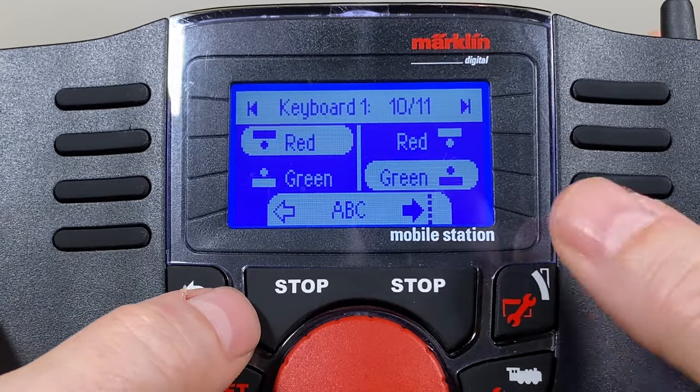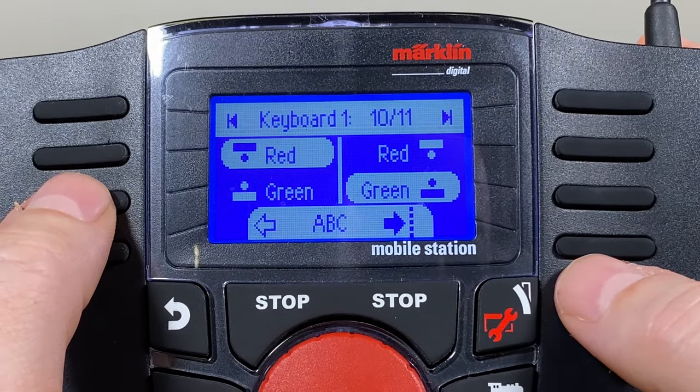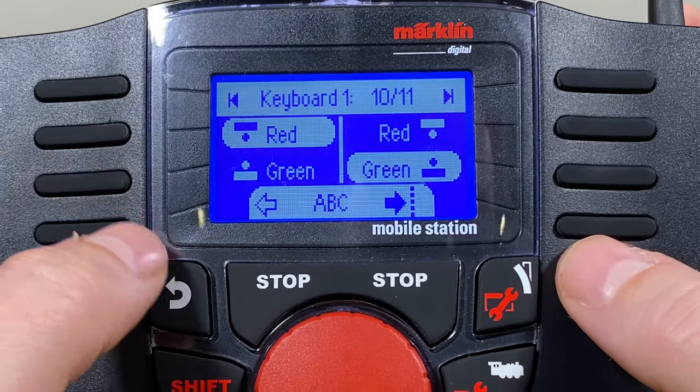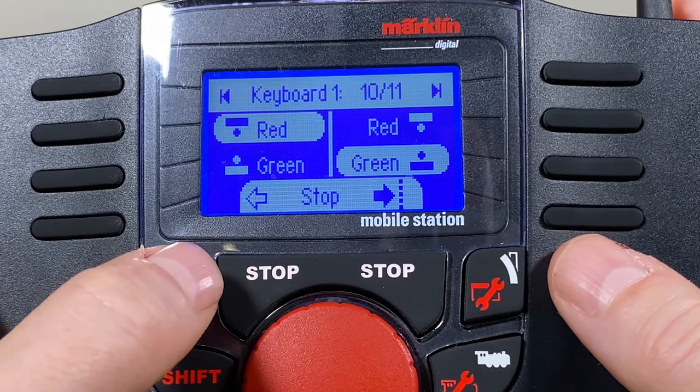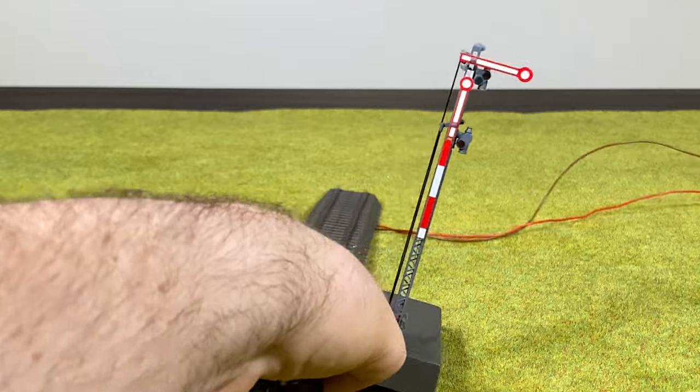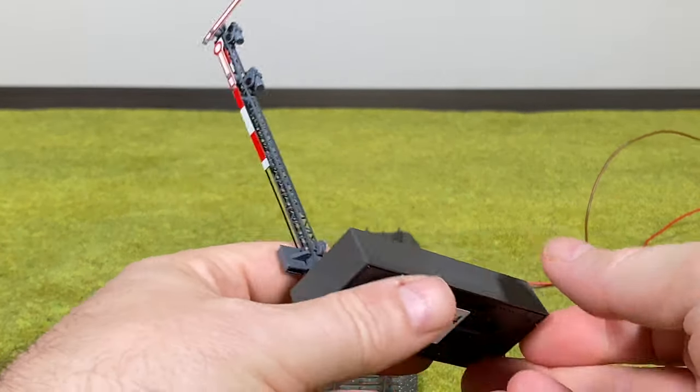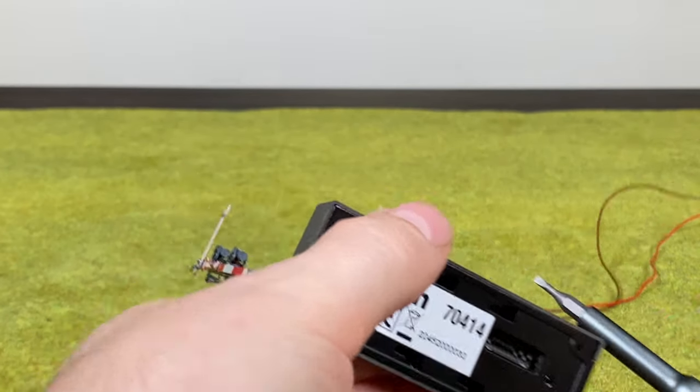Again when I go back here it will not change the signal since I'm in DCC mode and it will send it out here in Märklin mode. I go back and do the stop. Power off. I take the signal off again and I change the dip switch.